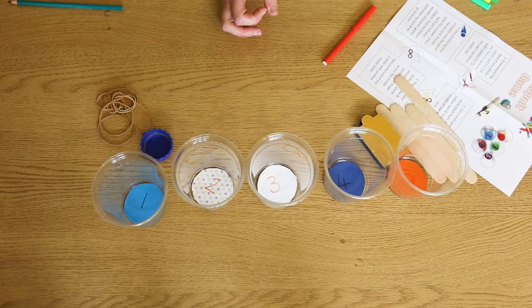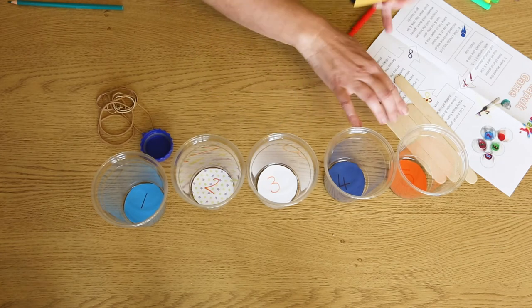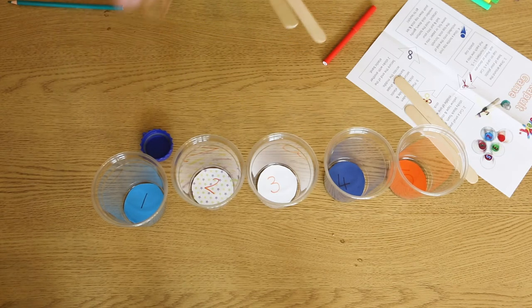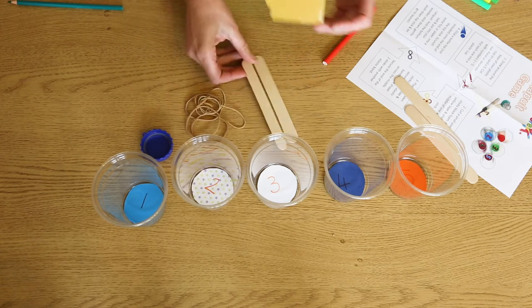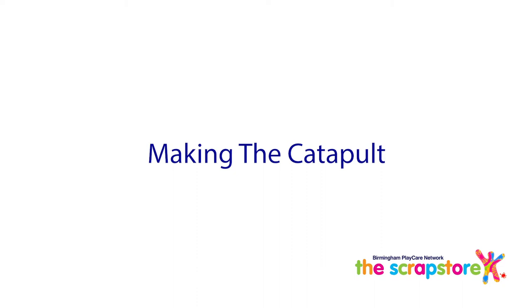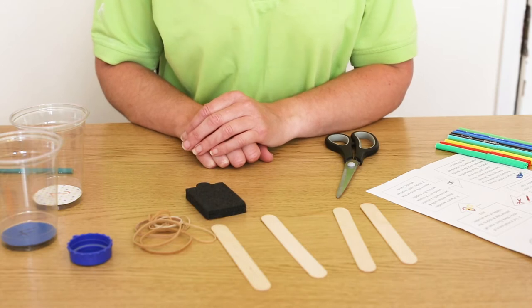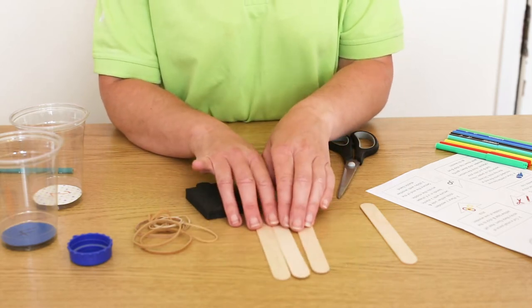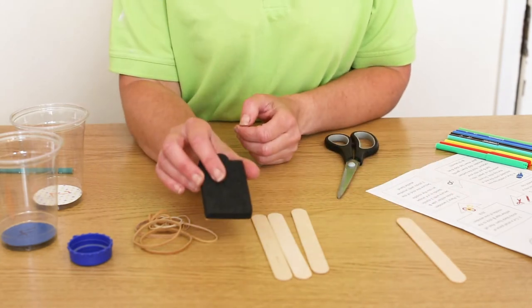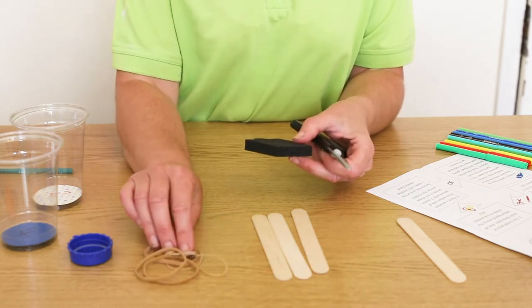The next stage, stage two, is going to be using your sticky black foam and your lollipop sticks and some rubber bands. So if you want to get those ready, that's the next bit of our make. Okay, so for the next bit of the make you need your lollipop sticks, only three, so that's just a spare in case. You need your piece of sticky black foam, your scissors and three rubber bands.